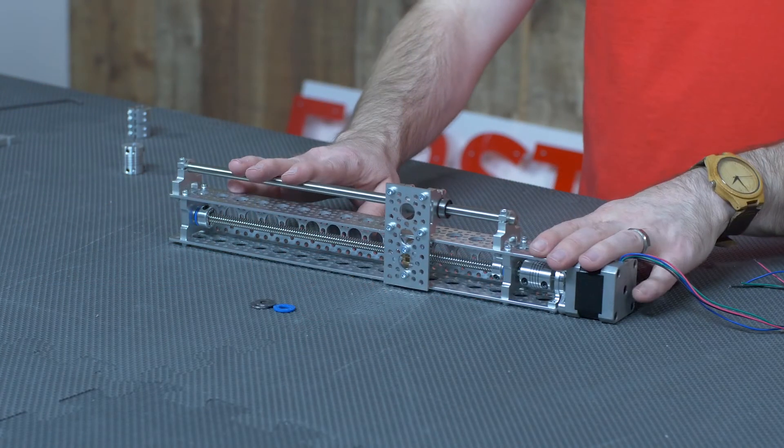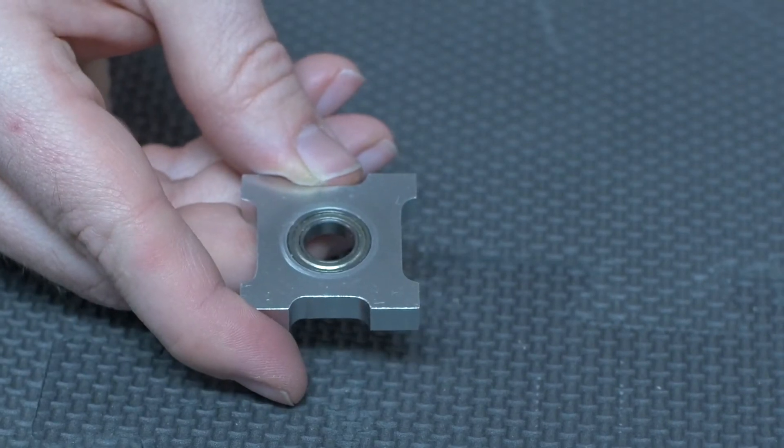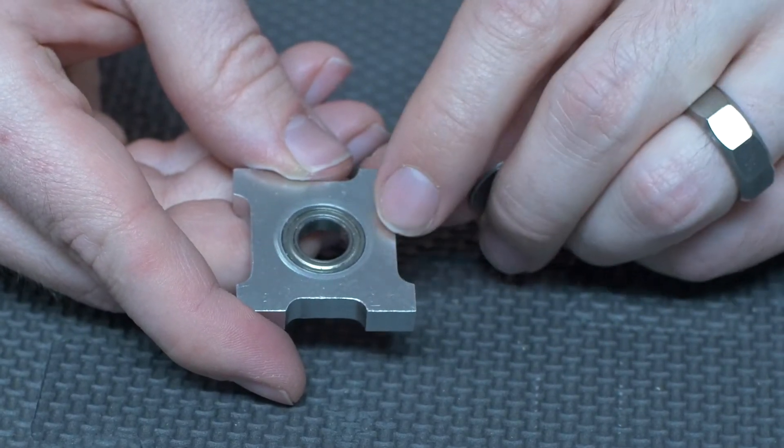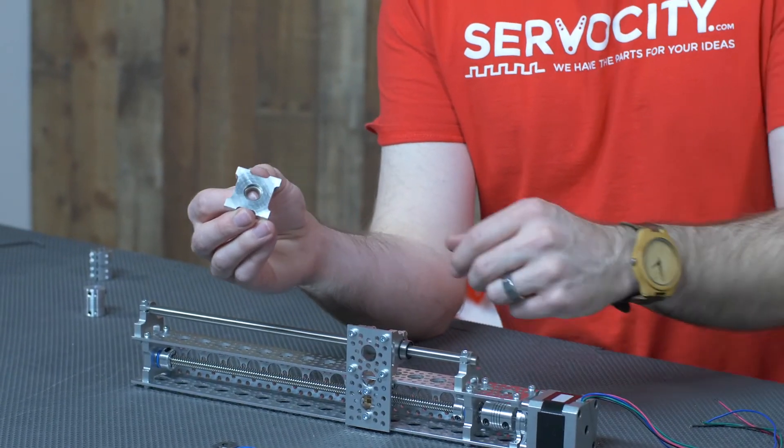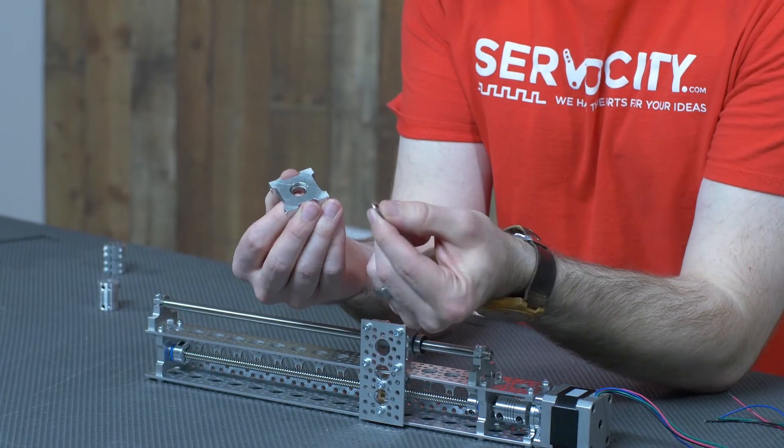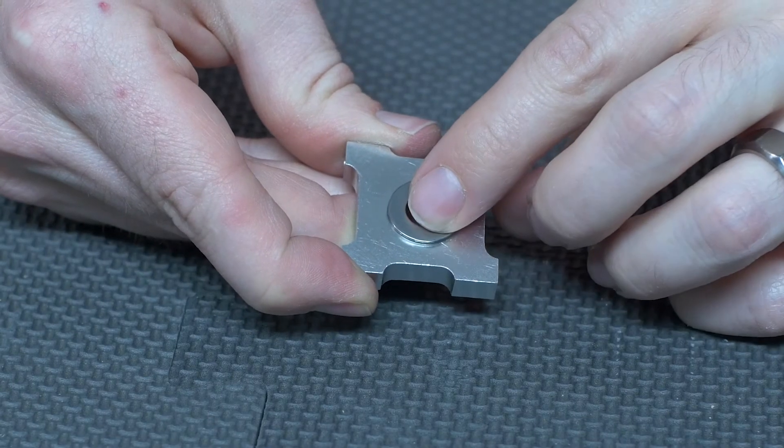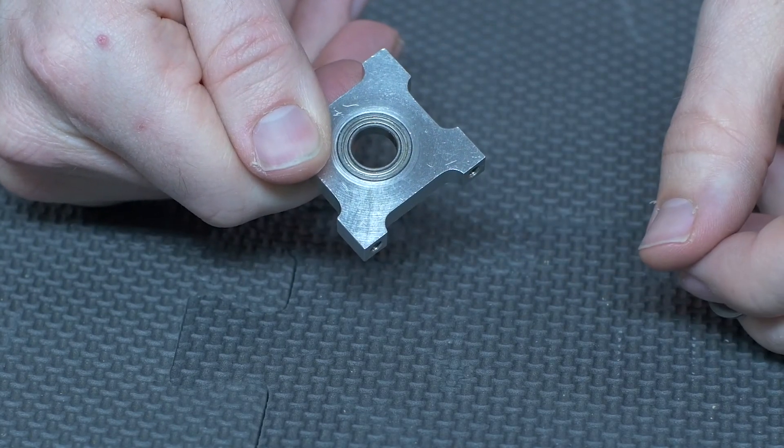As you can see in my assembly here, I'm using pillow blocks in conjunction with my thrust bearings. If you look at our pillow blocks, you'll notice that the bearing is press-fitted into one side, and the other side is going to be the side that you want to use the thrust bearings with if you can, because the washer of the thrust bearing will be pressing against the body of the pillow block, as opposed to pressing against the inner and outer race of the bearing.